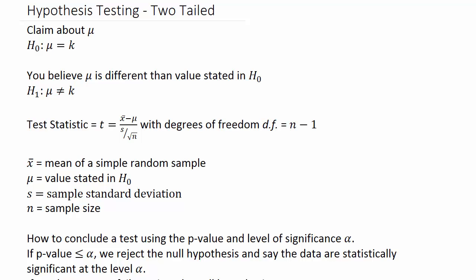This video will look at hypothesis testing — specifically a two-tailed test where sigma is unknown. The null hypothesis H₀ is that mu equals some number k. For the alternate hypothesis, since it's two-tailed, we believe mu is different than the value stated in H₀ — it could be less than or greater than; we're not saying one or the other.